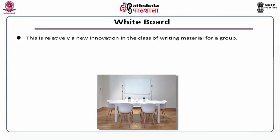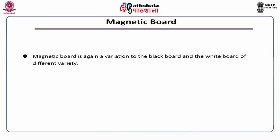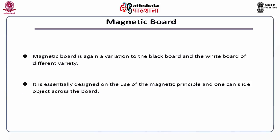Whiteboard. This is relatively a new innovation in the class of writing material for a group. Essentially it employs a board with a plastic finish upon which the instructor writes with a felt-tipped pen. Ordinary kinds of pen do not function on these boards. Magnetic board is again a variation to the blackboard and the whiteboard of a different variety. It is essentially designed on the use of the magnetic principle and one can slide objects across the board.